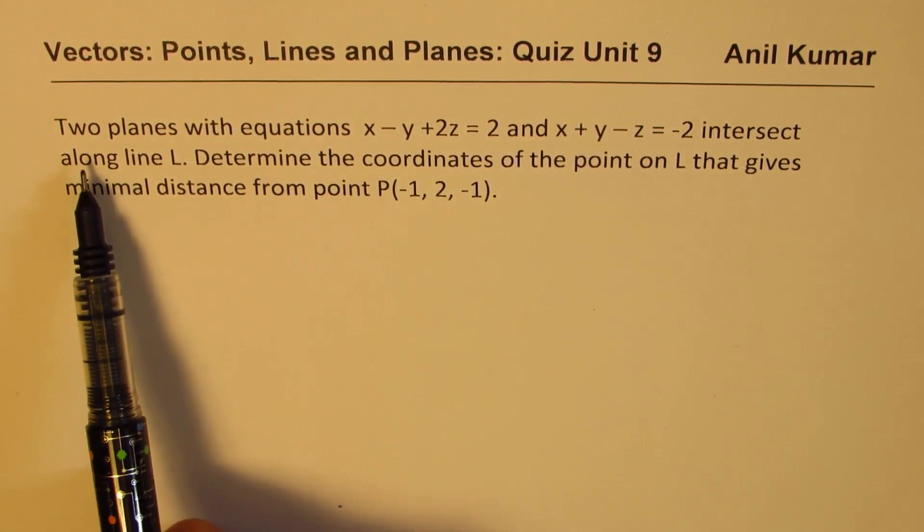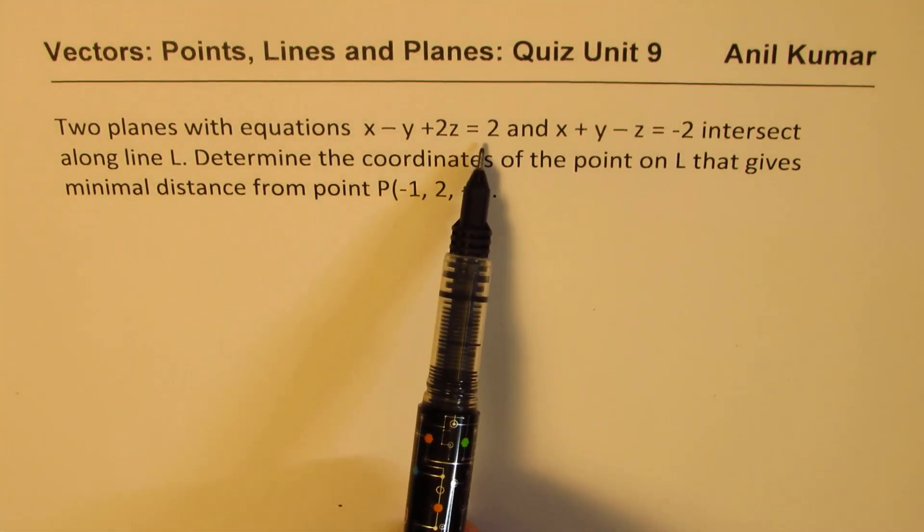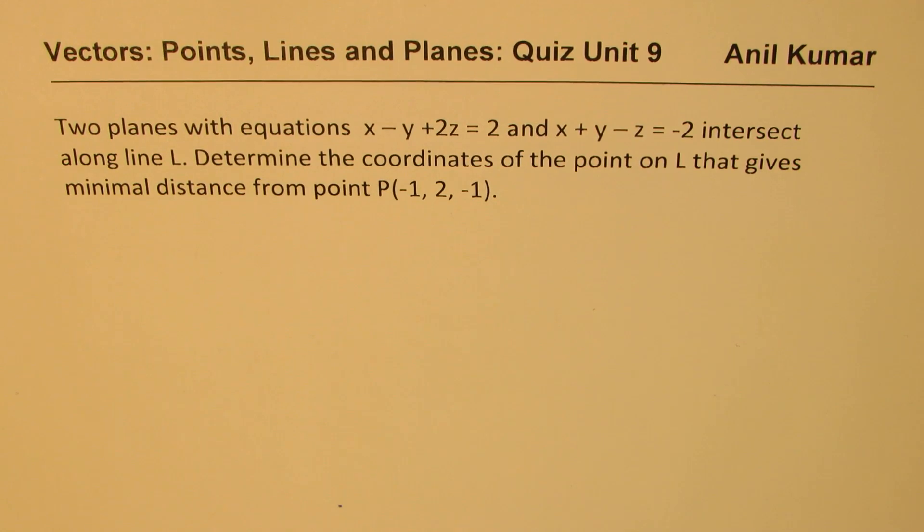Now this question is from one of my students and I hope the solution will help many others. Two planes with equation x minus y plus 2z equals 2 and x plus y minus z equals minus 2 intersect along line L. Determine the coordinates of the point on L that gives minimal distance from point P.